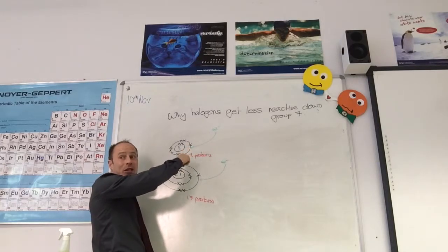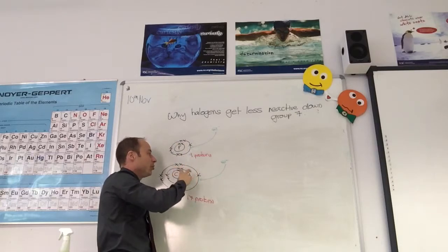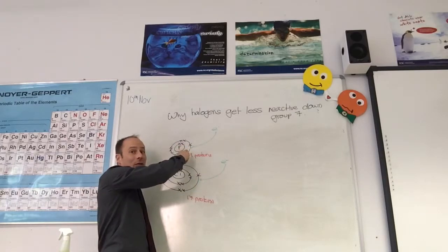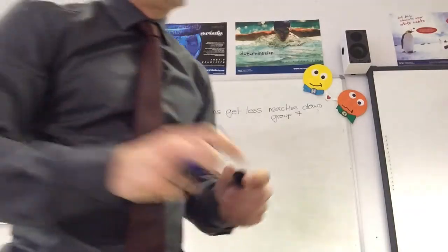Atomic radius - fluorine is going to be smaller than chlorine. So it is easier for fluorine to capture electrons than chlorine, because although it's got more protons, it's got fewer shells, less shielding, and is a smaller atom as well. So we'll just write that down.